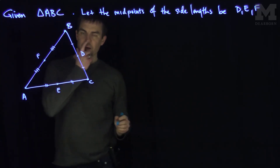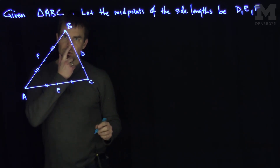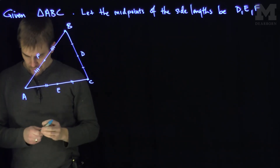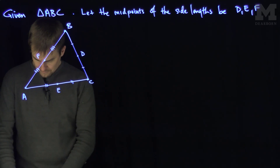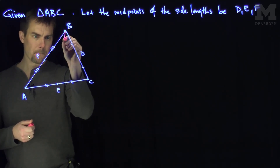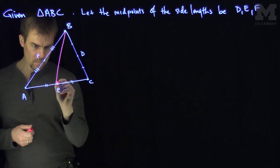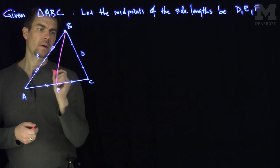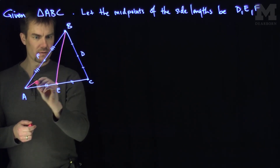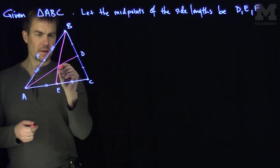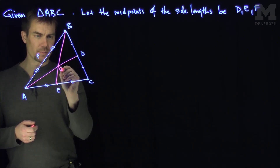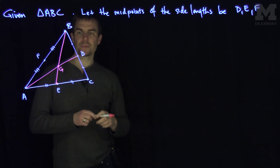So we have the three midpoints. Now I'm going to consider the intersection. I'm going to draw the first cevian from B to E, and I'm going to draw the cevian from A to D. And those two lines are going to intersect at a point which I'm going to call G.